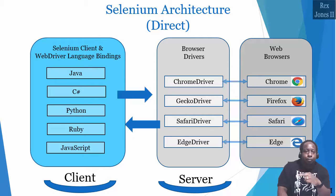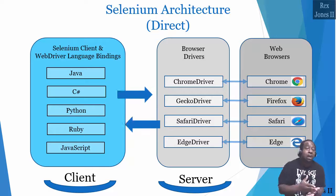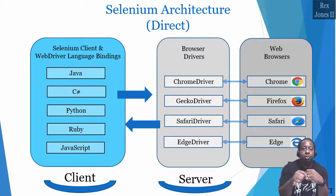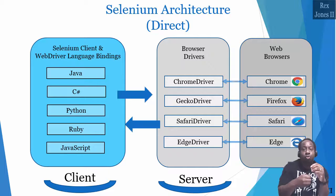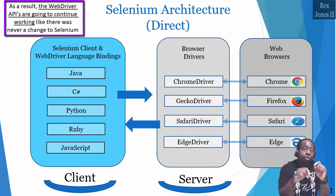The second advantage is stability. Backward compatibility is the main benefit of stability. Per Simon Stewart, they are fully aware that some people would want to use the old JSON Wire Protocol. They know we have spent time, effort, and dedication building up our test suite. Therefore, our test suite would remain smooth for Selenium 4. No changes to our test scripts unless an API has been deprecated. Deprecated APIs like the FindsBy interfaces have been removed from Selenium 4. As a result, the WebDriver APIs are going to continue working like there was never a change to Selenium.